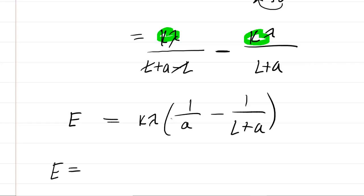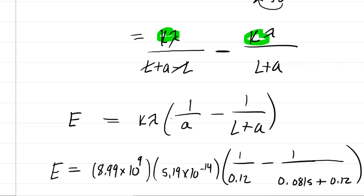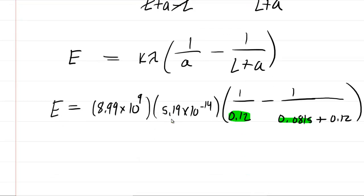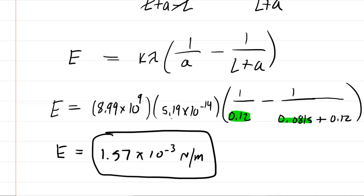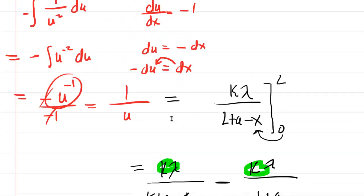Now we plug in the known values. We've omitted the units for clarity, but be careful — A was given as 12 centimeters, so convert that to meters by moving the decimal two places to the left. Same thing with L — convert to meters. When you punch this in, you get a total electric field at point P of about 1.57 times 10 to the minus 3 newtons per coulomb. That's the correct answer to part B — the magnitude of the electric field.